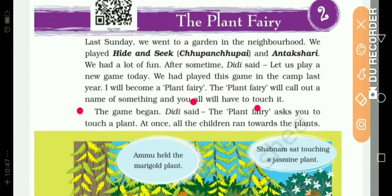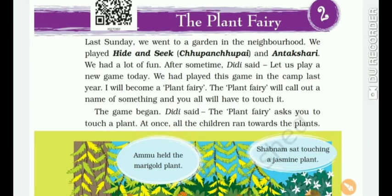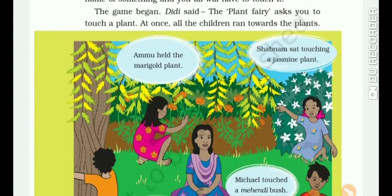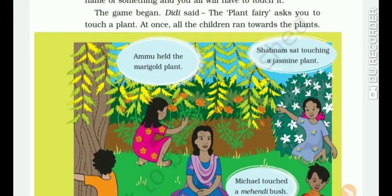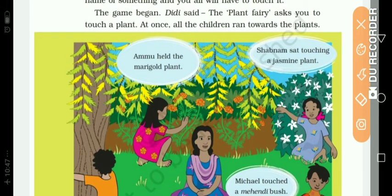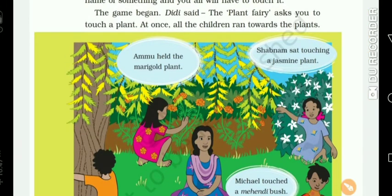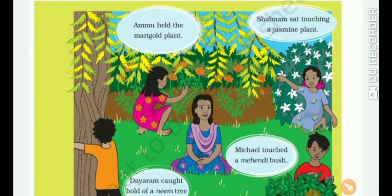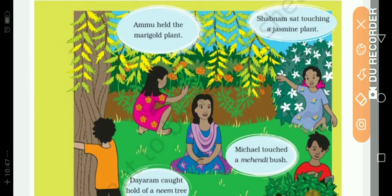The game began. Didi said the plant fairy asked you to touch a plant. At once, all the children ran towards the plant. So now we can see the game has started. Didi said they have to touch any plant. As soon as the order was given, all the children started running to touch a plant.